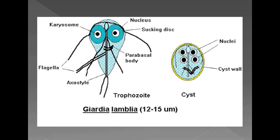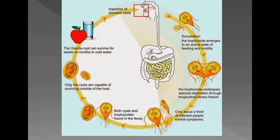The cyst has four nuclei, a thickened cell wall, and it is the infective form. The person gets infection through contaminated food and water.